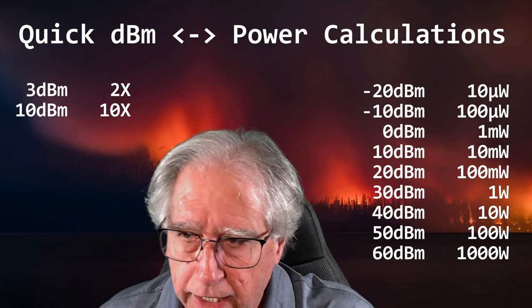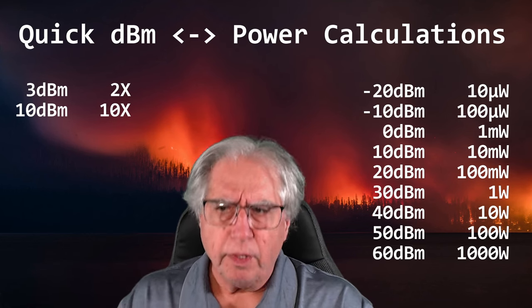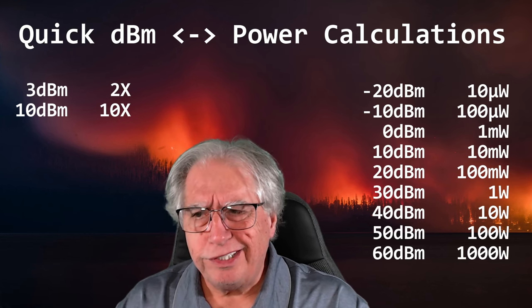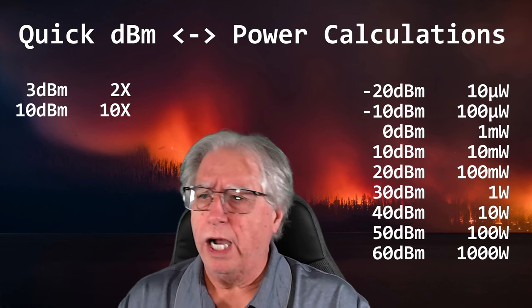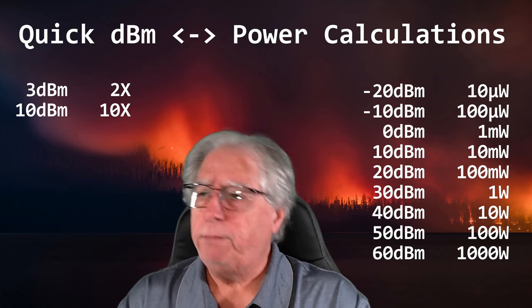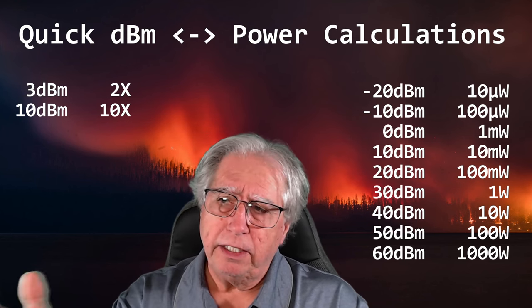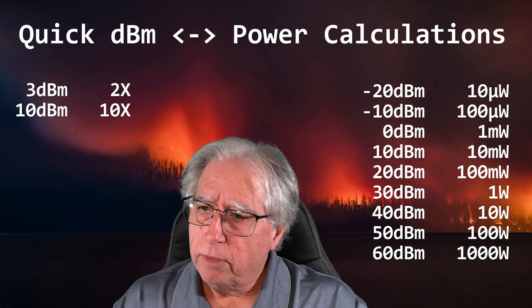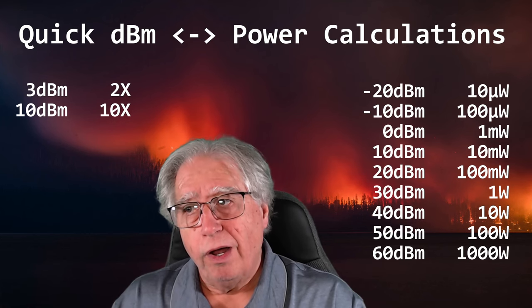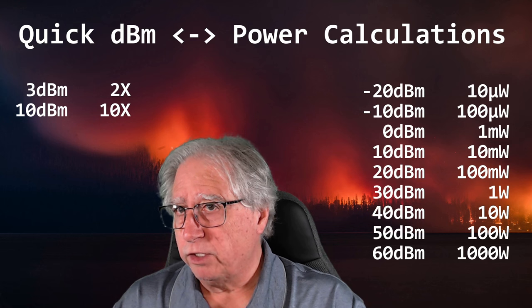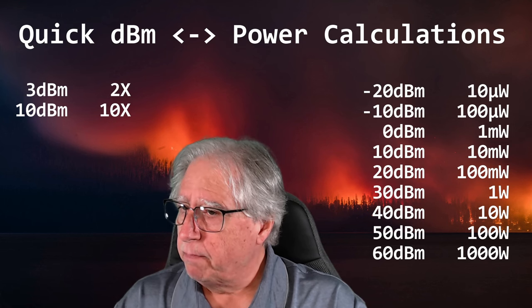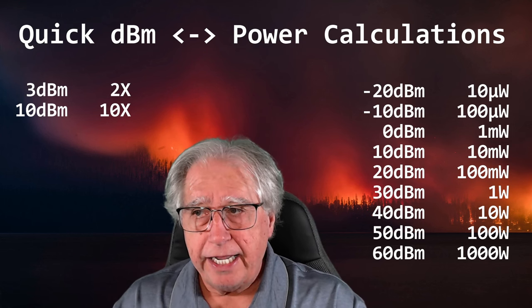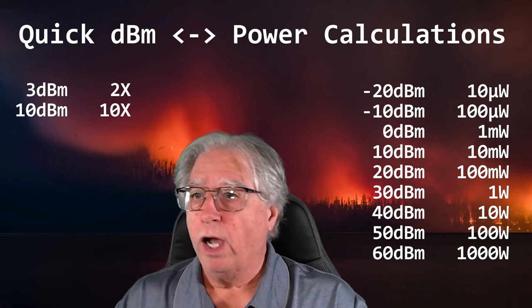It works in both directions. Notice: 3 dBm equals two times, or double. So if I take 50 dBm and add 3 dBm to make it 53 dBm, that 100 watts becomes 200 watts. If I take that 3 dBm away, I divide by 2, and that 100 watts becomes 50 watts.